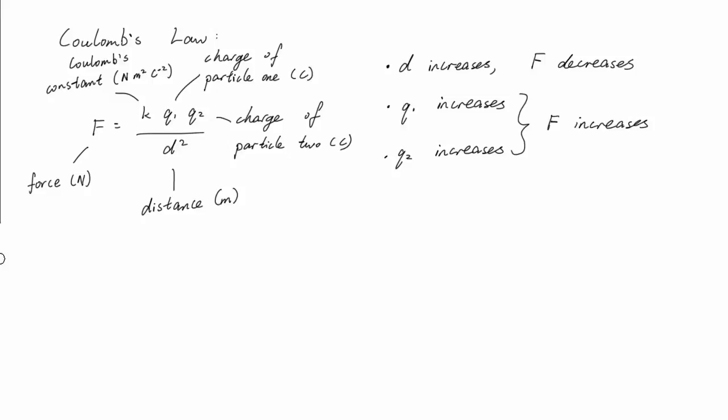Coulomb's constant, K, is given by 1 over 4 pi epsilon 0, where epsilon 0 is a constant: 8.854 times 10 to the negative 12 farads per meter, to be precise. It's known as the permittivity of free space.